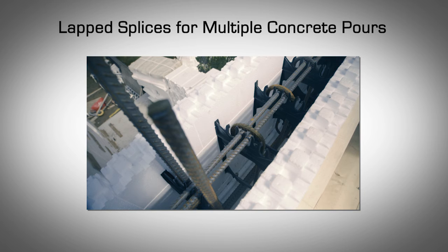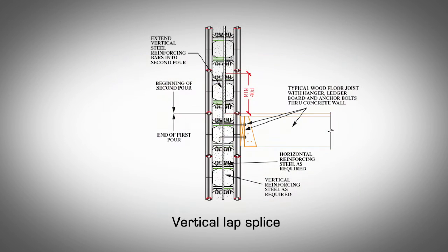There are two options, both of which are satisfactory from an engineering structural standpoint. Option one: extend the vertical reinforcement steel bars beyond the top level of the lower story. The length of the extension should be equal to the required splice length specified by the design engineer or a minimum length of 40D. Please refer to figure 6.5 for typical details.